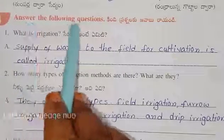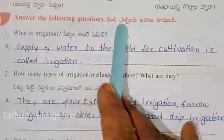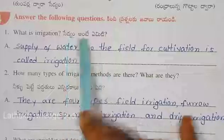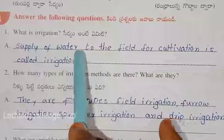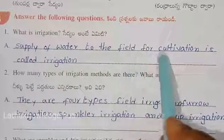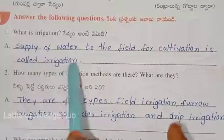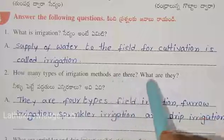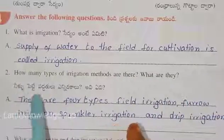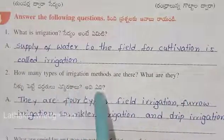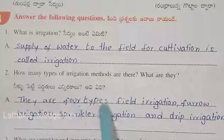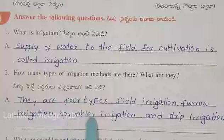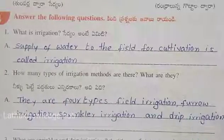Answer the following questions. What is irrigation? Supply of water to the field for cultivation is called irrigation. How many types of irrigation methods are there? What are they? There are four types: field irrigation, furrow irrigation, sprinkler irrigation, and drip irrigation.